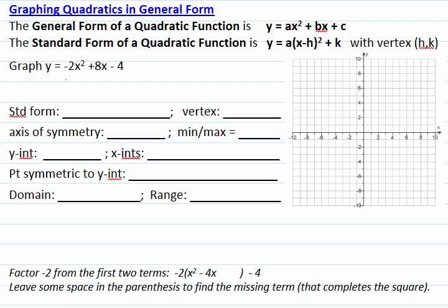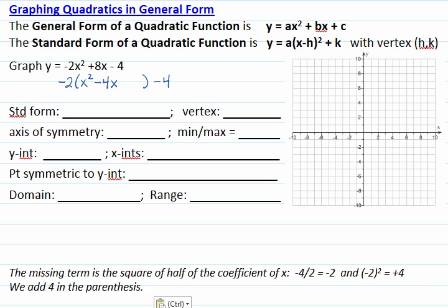To complete the square, we will factor negative 2 from the first two terms and leave some space in the parenthesis to complete the square. Then we try to find the missing term that will complete the square. The missing term is half of negative 4, squared — so negative 2 squared is plus 4 — so we add 4 in the parenthesis.